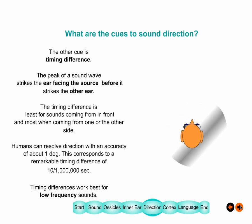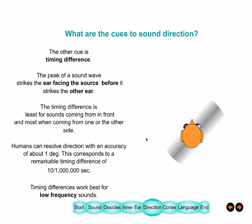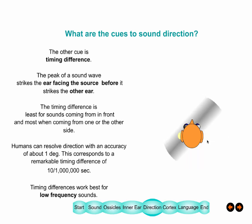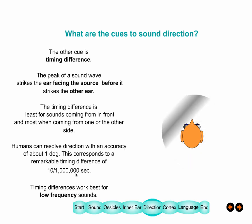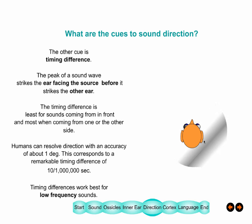The other cue is timing difference. This is truly amazing. In the slowed-down animation, sound hits one ear first and the other ear second. But in real life this happens in something like one ten-millionth of a second, and your brain is able to measure that difference.